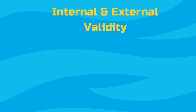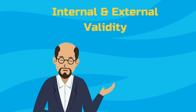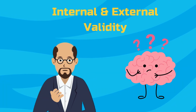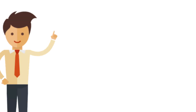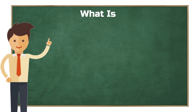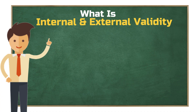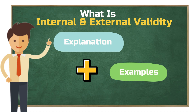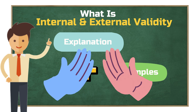Internal and external validity — these terms pop up all the time in research methods courses, but what do they actually mean? If you've ever wondered how to tell whether a study is truly solid or just looks good on paper, you're in the right place. We're cutting through the jargon and getting to the heart of what internal and external validity really mean, clearly explained with examples that actually make sense. So whether you're working on a research project or just trying to wrap your head around these concepts for an exam, let's break it down together.